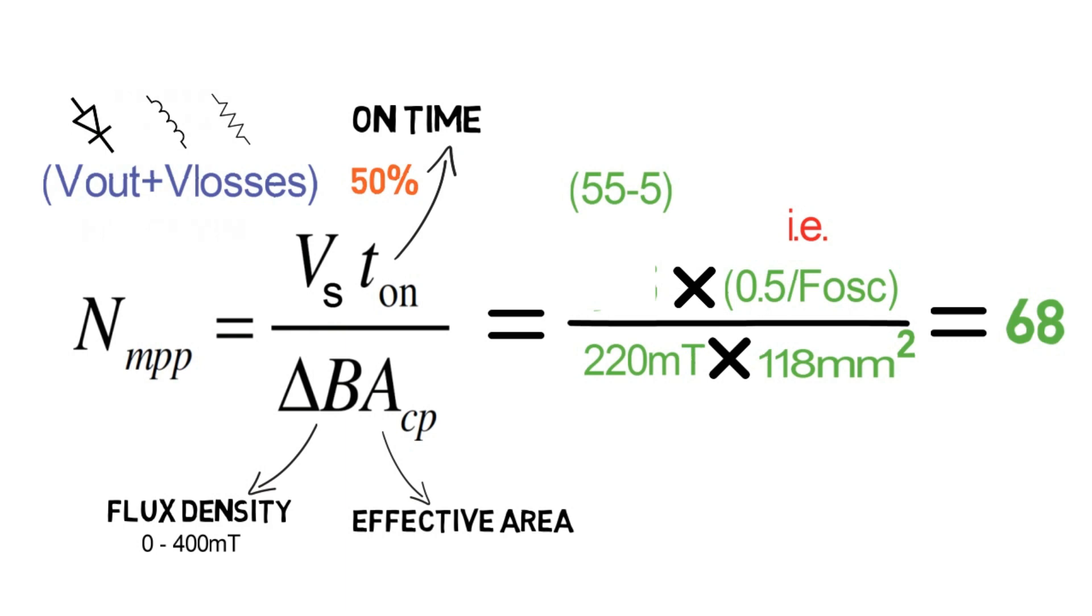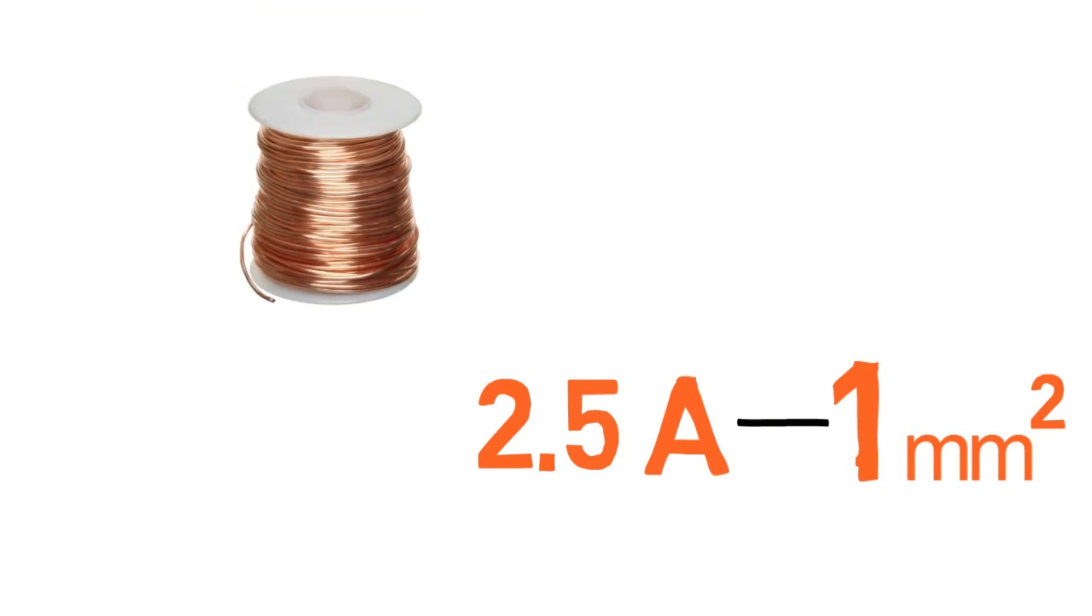Generally for 2.5 amps of current, 1 mm square cross-sectional area of the wire is sufficient. This is not the standard assumption, but if we increase this current value per mm square, then more heat will dissipate and heating losses will increase.